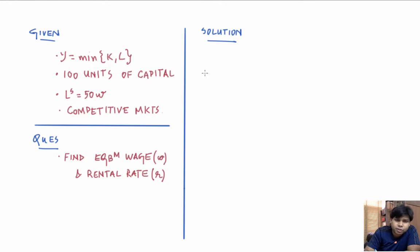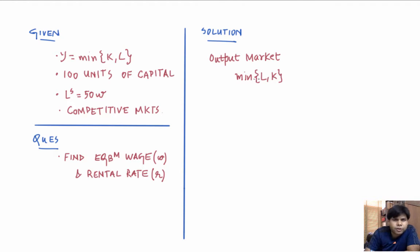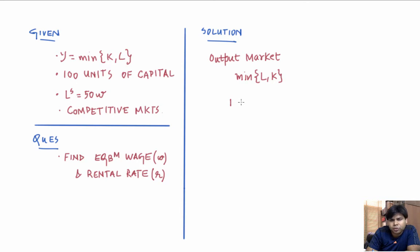Let's solve this problem. We will begin with the output market. In the output market we have perfect competition, and the production function is min(L, K), so every unit of output produced using labor and capital in an efficient way requires one unit of labor and one unit of capital. So every unit of output produced is going to cost w plus r, where w is the price of labor and r is the price of capital. We assume the price of output is one — that's the numeraire — so wages and rental rates are all in terms of this output.